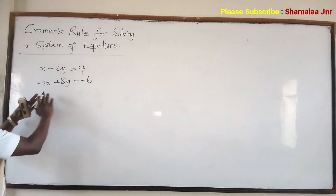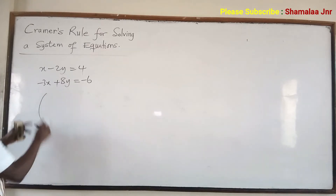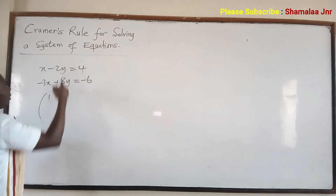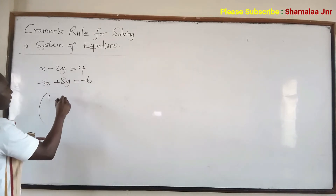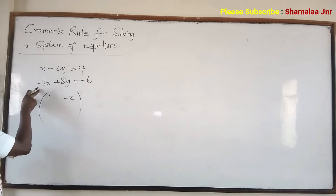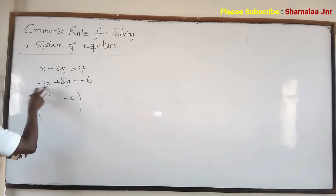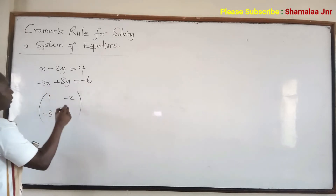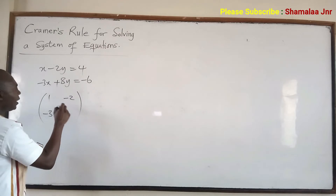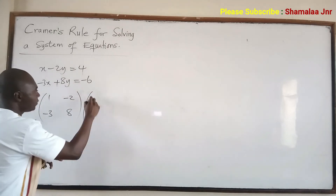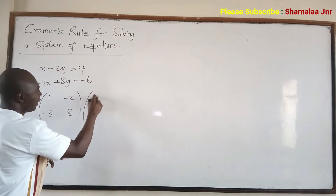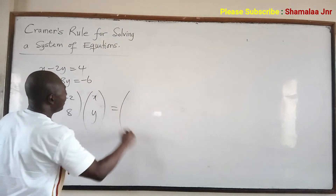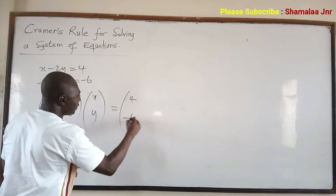So again, let's try to rewrite this. The coefficient of x here is 1, the coefficient of y here is negative 2. The coefficient of x in the second equation is negative 3, the coefficient of y is 8. So the matrix times x, y equals the right-hand side: 4, negative 6.